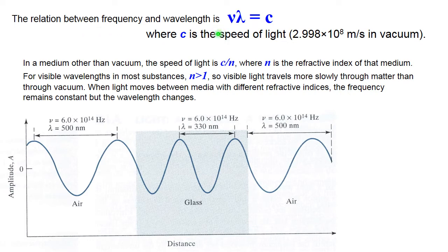There is a simple relationship between frequency and wavelength. Frequency, that's not V, that's Greek letter nu, multiplied by wavelength lambda, is speed of light. In media other than vacuum, speed of light is smaller, divided by refractive index of that medium.